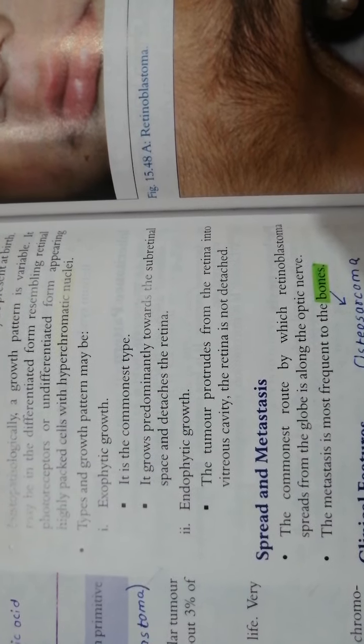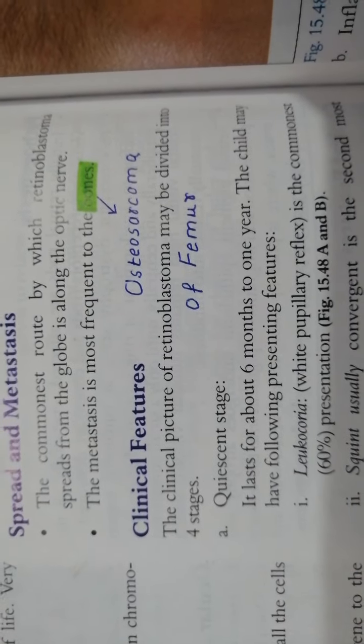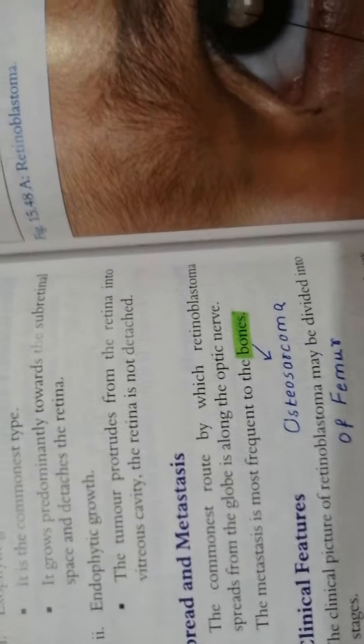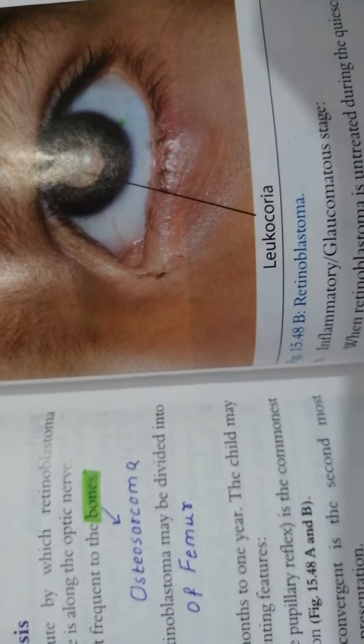In the first stages, we divide the clinical features. In the first stages, there is a quiescent stage. Quiescent basically means resting. One is inflammatory stage. And then there is extra ocular extension stage.